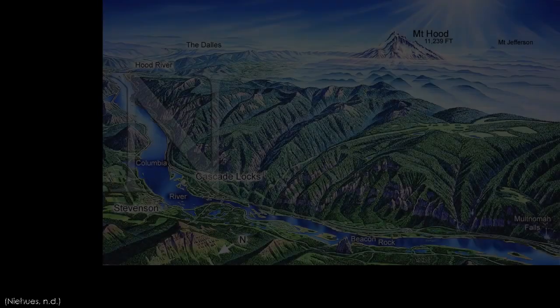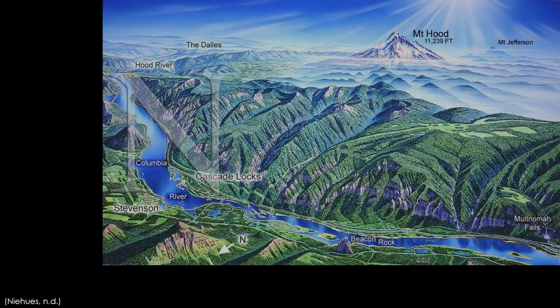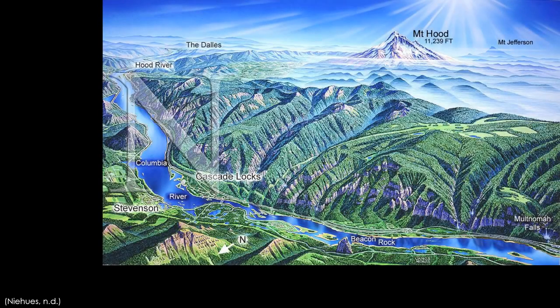Landform fractals can be identified in most types of terrain. These slides will focus on familiar landforms of the Pacific Northwest. This artistic representation of the Columbia Gorge is a perfect example of fractal patterns and landforms. Like most naturally occurring fractals, these shapes have grown through the passing of time.